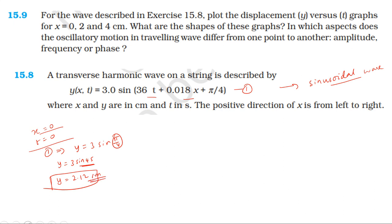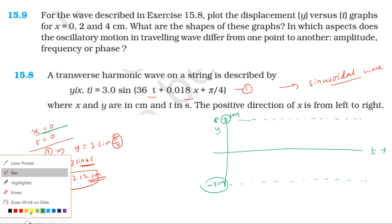Okay, cm graph. y axis displacement, x axis time graph. Amplitude 3, amplitude 3. Amplitude 3 top bottom graph. x equal to 0 particle graph. t equal to 0, 2.12, sin graph.